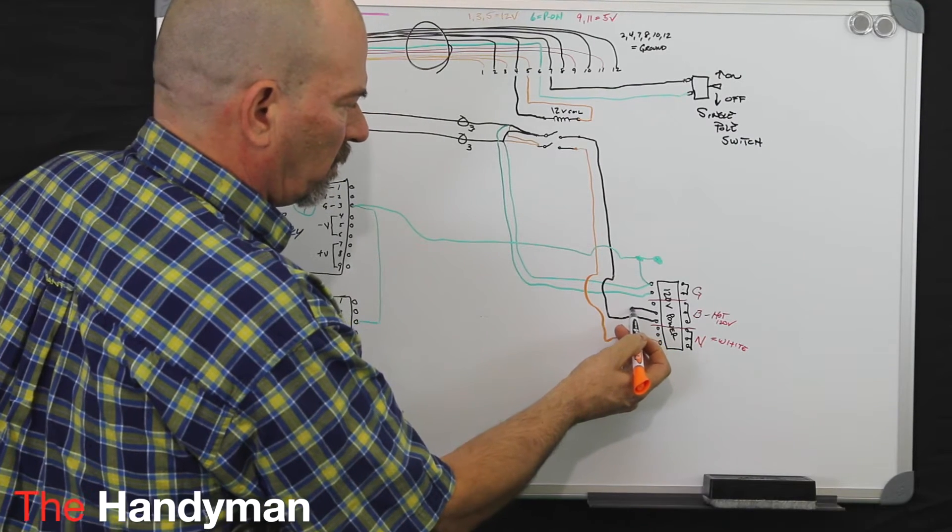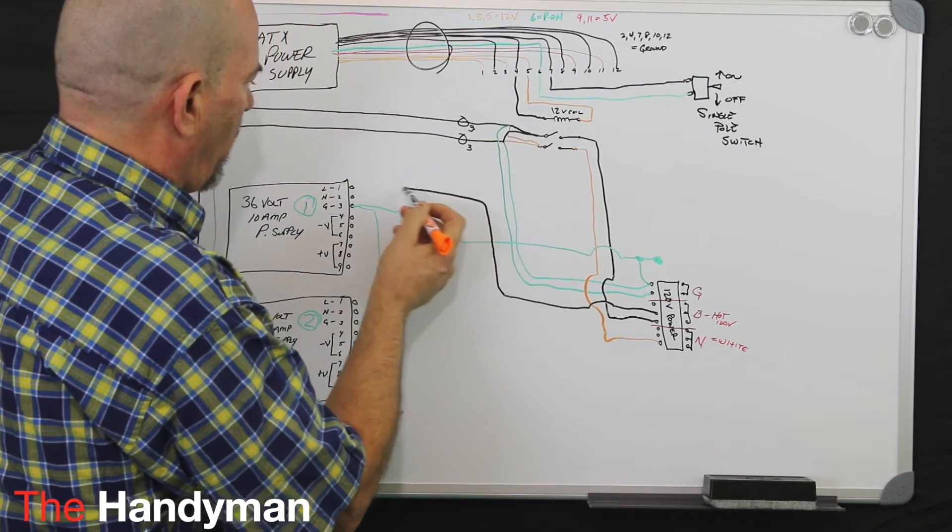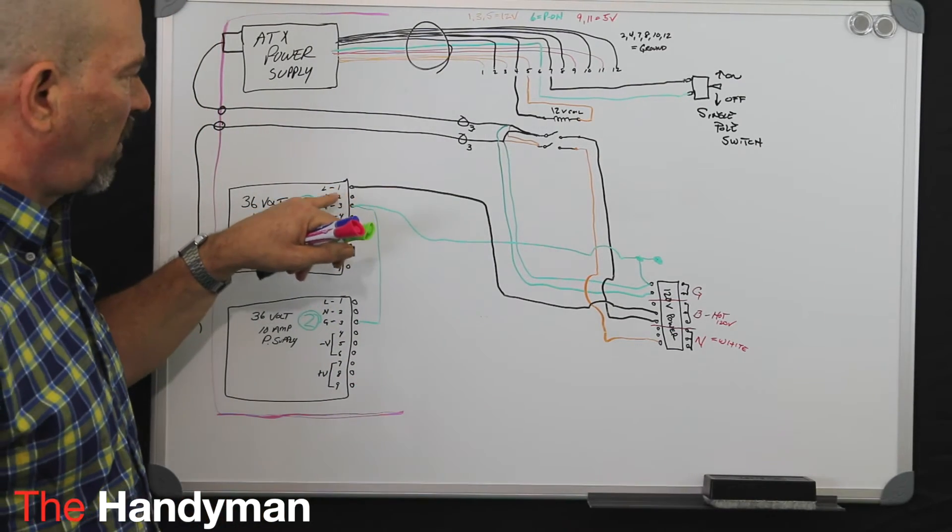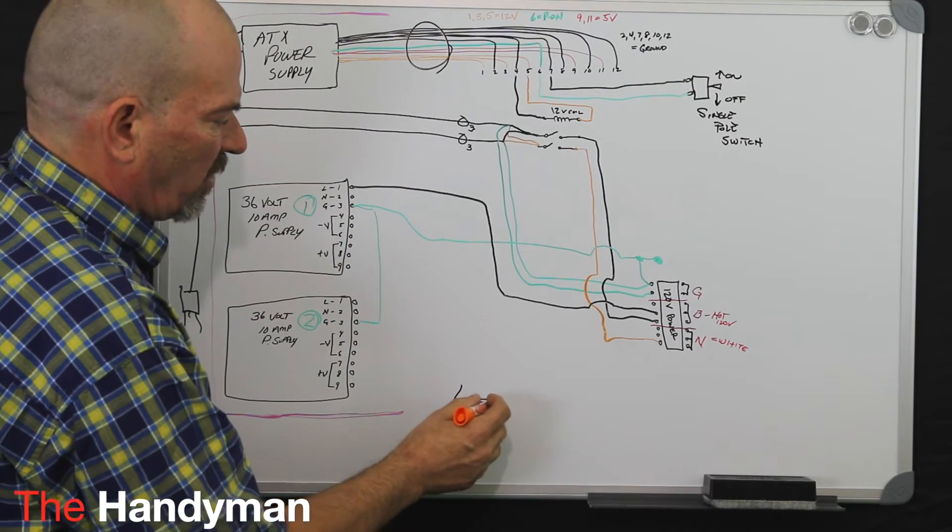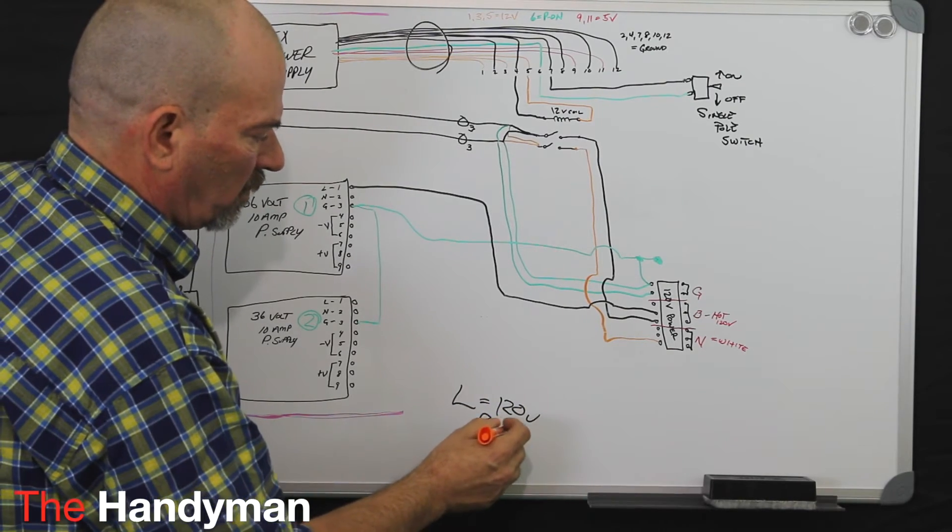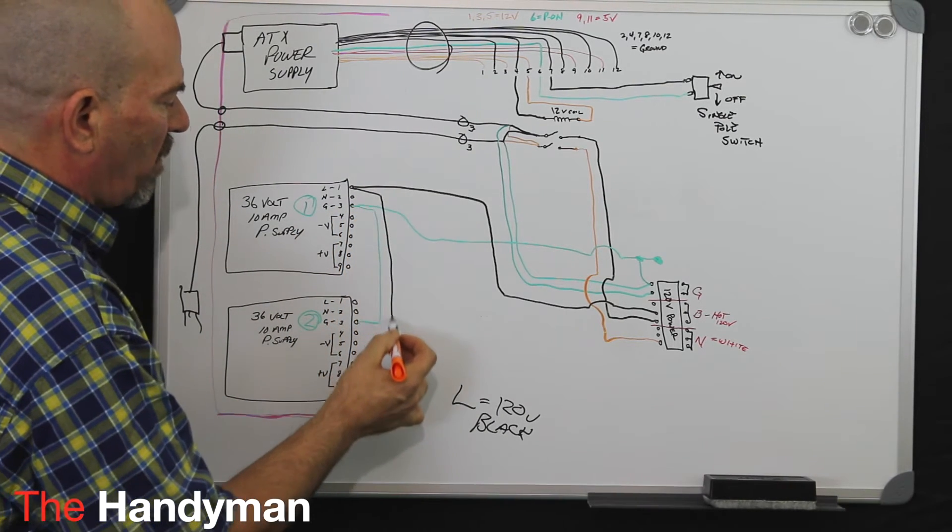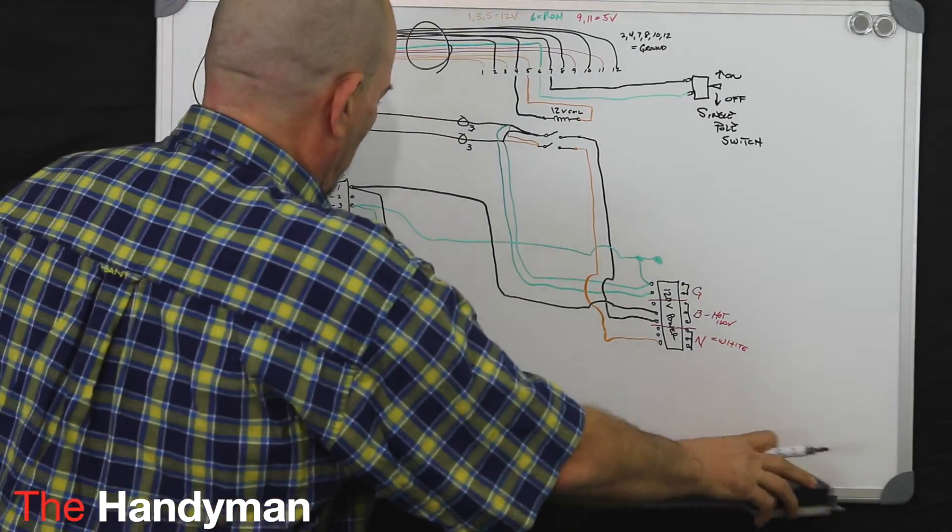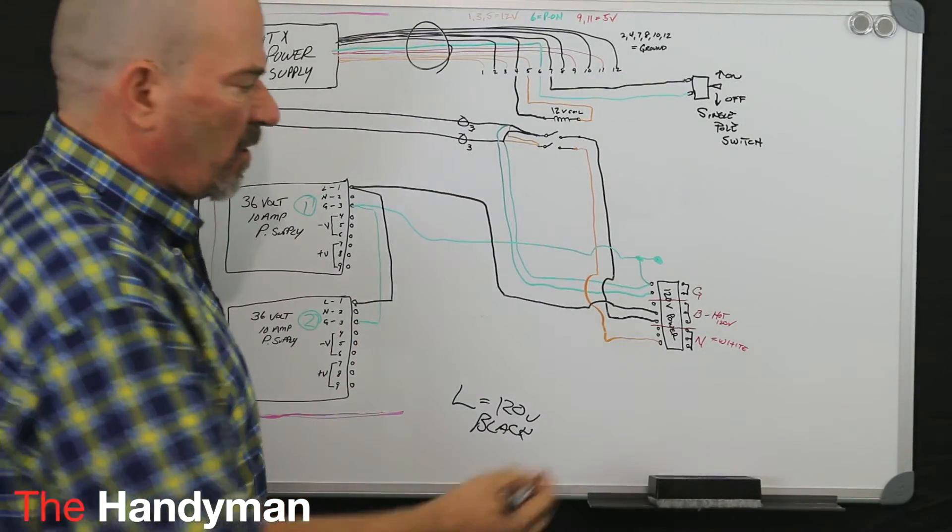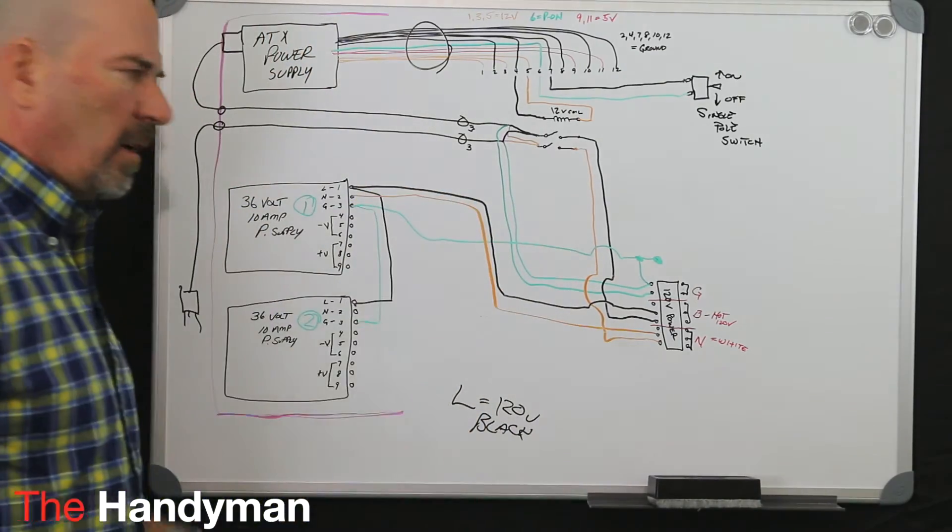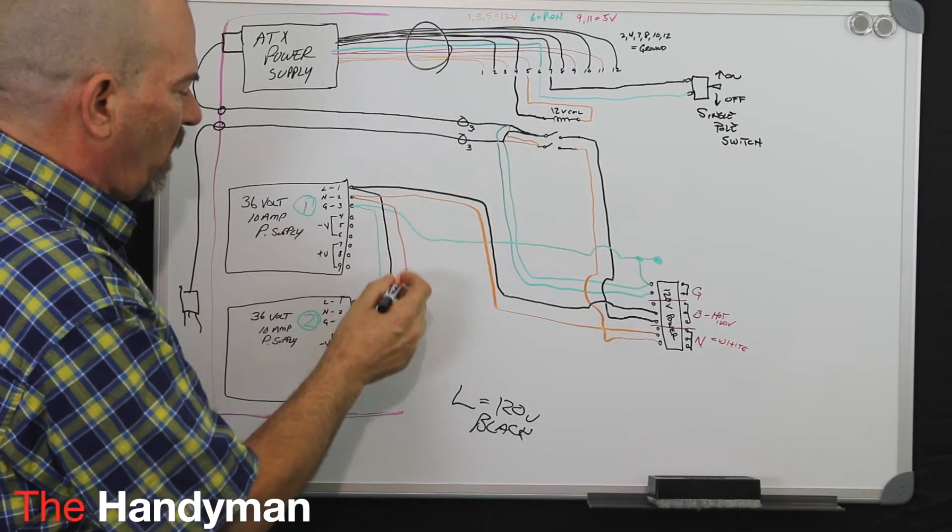So next we'll take one of the blacks from that screw, bring that up, and on my power supplies, which yours should be too, the first screw is your line represented with an L, which is your 120 volt side or your black. Then you'll take and make a jumper off that to come down to your other power supply. I went a little far there, and you will put that under your power supply. Then you'll come off your neutral and you'll go under terminal number two, which is marked with an N. Then you'll make a jumper and the same thing, you'll come down here into there.